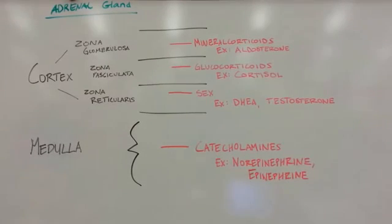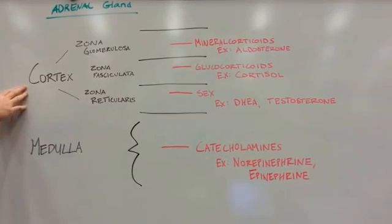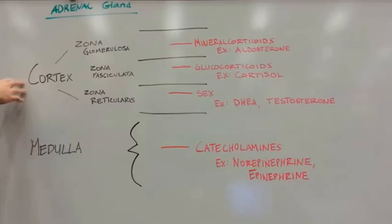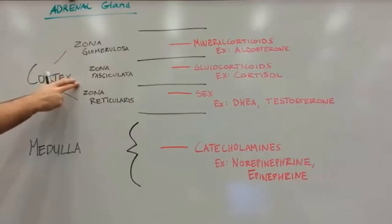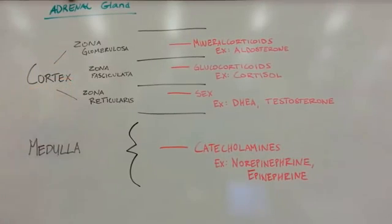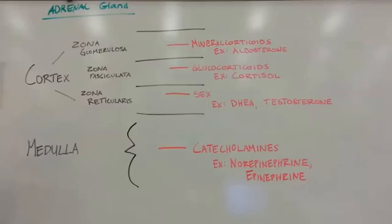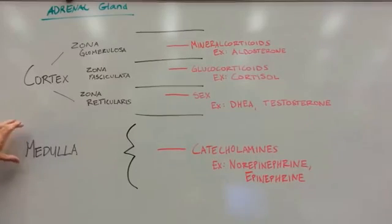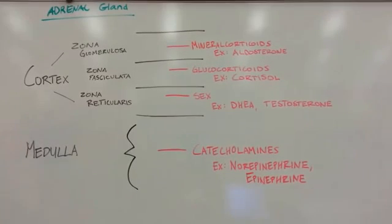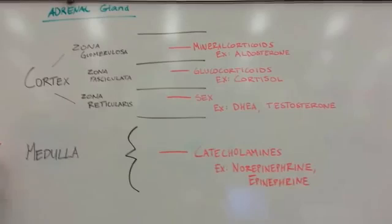Here are the basics of the layers of the adrenal gland. You've got the cortex, which is on the outside of the adrenal gland, separated into three different layers: the zona glomerulosa, zona fasciculata, and the zona reticularis. Then you've got the medulla portion of the adrenal gland, which is on the inside.